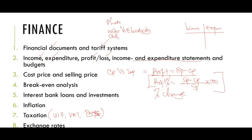Breakeven point — come to an exam and you know breakeven point. How do we tell the breakeven point? It's a point where income will always equal to expenditure or expense — the same money you put in, the same money that goes out. Income equals expenditure. Take note: there is no loss, no profit at breakeven point.